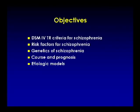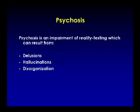The objectives for this talk: first, we're going to cover the DSM criteria for schizophrenia, then talk about the risk factors including genetics, the course and prognosis, and then we'll end with etiologic models — neurodegenerative, neurodevelopmental, and biochemical models. This is a lot of material; I'll go as quickly as I can, but all the information is in your syllabus.